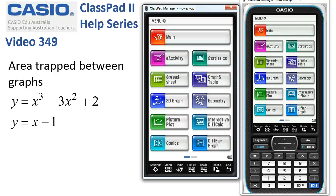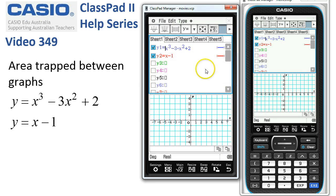Calculating the area trapped between graphs. We can do this very easily in graph and table. You can see here I've entered the two functions: x cubed minus 3x squared plus 2, and x minus 1.